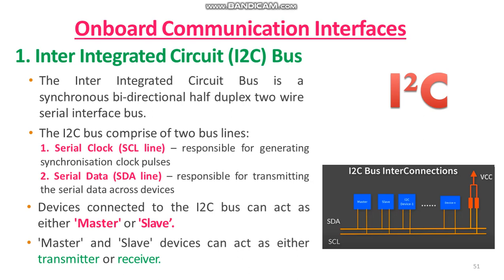I2C was invented by Philips and now it is used by almost all major IC manufacturers. The I2C bus comprises two bus lines: serial clock and serial data. The serial clock SCL line is responsible for generating synchronization clock pulses, whereas the serial data line is responsible for transmitting the serial data across devices.